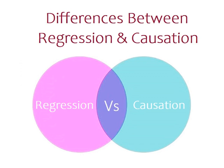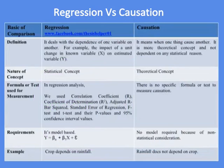Differences between regression and causation. The definition of regression is that it deals with the dependence of one variable on another. For example, the impact of a unit change in known variable x on estimated variable y.